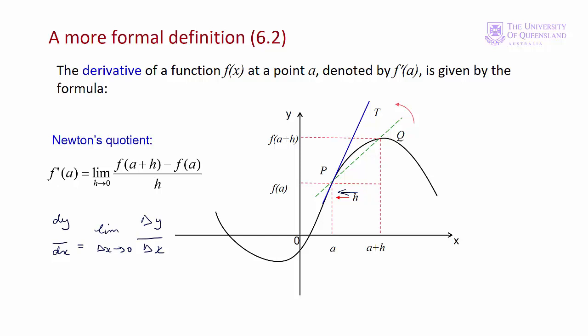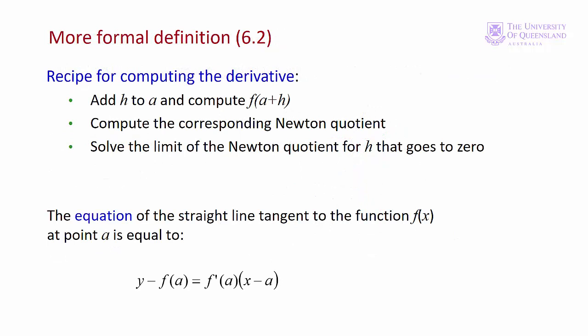Later in the lecture we'll learn various rules of differentiation. We can derive all of these rules using the Newton quotient and some algebra — though you won't have to in this course. This is how we would find the derivative of a function from first principles: start with our point a, add h to a and compute f(a + h), compute the Newton quotient, simplify and solve for the limit as h approaches zero. Once we have the slope we can use our point-slope formula to find the slope of the tangent to the function at point a.